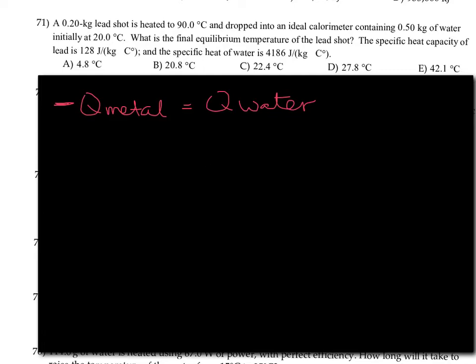Here's one way to solve these problems. You can go Q, m, c, delta T on one side, Q, m, c, delta T on the other, where one side's the metal and one side's the water. And we know that these two Qs here have to be equal.